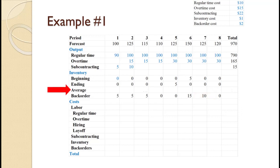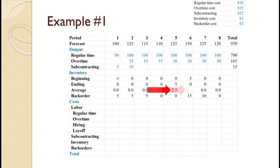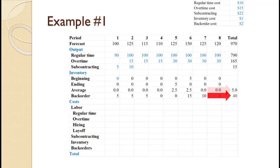We are now going to calculate average inventory, which is just the average of beginning and ending inventory — that is, beginning plus ending divided by 2. Keep one decimal point for these values. For periods 1, 2, 3, 4, 7, and 8, the average inventory is 0. For periods 5 and 6, the average inventory is 2.5. The total average inventory is 0 + 0 + 0 + 0 + 2.5 + 2.5 + 0 + 0 = 5. For backorders, 5 + 5 + 5 + 0 + 0 + 15 + 10 + 0 = 40. That completes the inventory calculations.